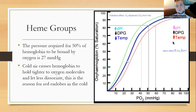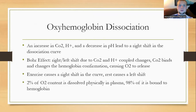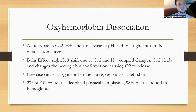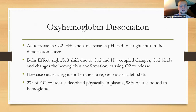Increasing carbon dioxide and hydrogen ion while decreasing pH leads to a right shift in the dissociation curve — less oxygen bound to hemoglobin. We also see the Bohr effect: a right-to-left shift due to carbon dioxide and hydrogen ion changes. Carbon dioxide binds to hemoglobin and changes its conformation, immediately causing oxygen to release. So binding of carbon dioxide causes oxygen to release, and binding of oxygen causes carbon dioxide to release.